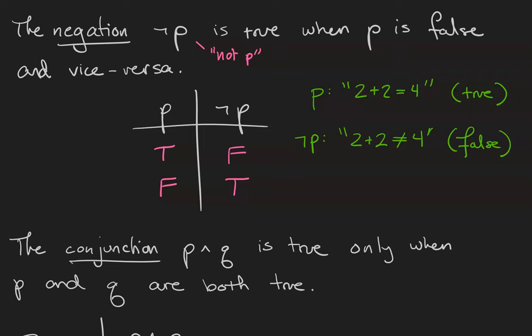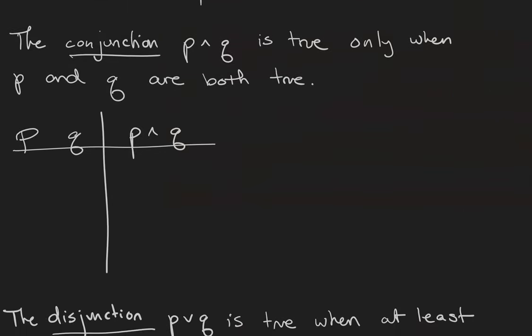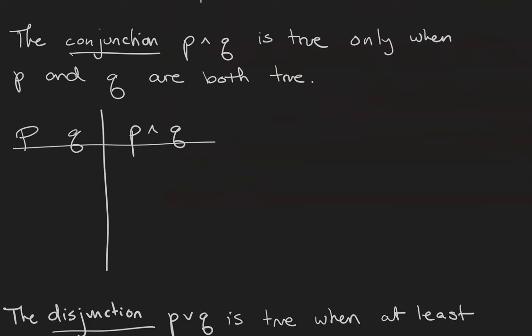Negation is called a unary connective because it only includes one statement. Things get a little more interesting once we allow for two or more statements. So next we're going to have the conjunction P and Q, which is true only when P and Q are both true. If you think about it in English, if you say a statement with an and in it, both parts of your statement had better be true.